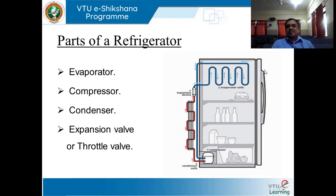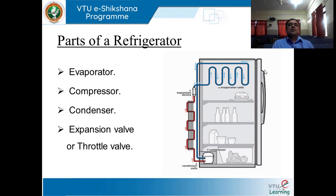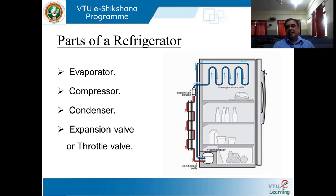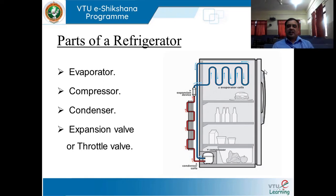On achieving condensation, the refrigerant will approach the expansion or throttle valve. In the expansion valve, due to expansion, the form of refrigerant is converted. Initially it was liquid, then vapor; now on completing the thermodynamic processes successfully, the vapor refrigerant is retrieved back to liquid. These four components — evaporator, compressor, condenser, and expansion valve — are the four pillars responsible for accomplishing the action of refrigeration.